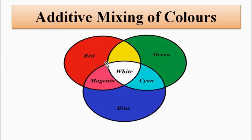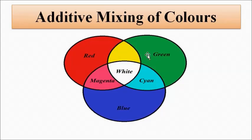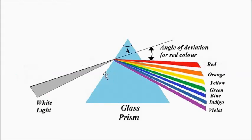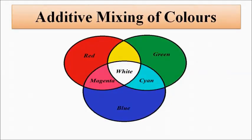We can understand the secondary color formation with the help of three overlapping circles — Venn diagrams. Red, green, and blue are the three big circles representing the three primary colors. The overlap between red and blue gives magenta; the overlap of red and green gives yellow; green and blue overlap gives cyan. Another important thing: when all three circles overlap, it gives us white. So red plus blue plus green gives white. This is the concept of additive mixing of colors.